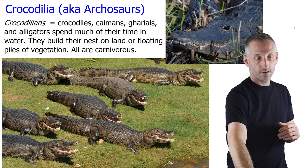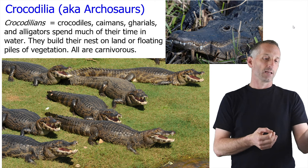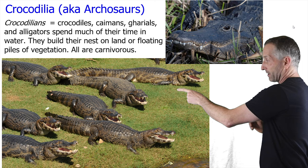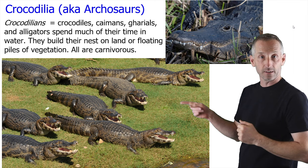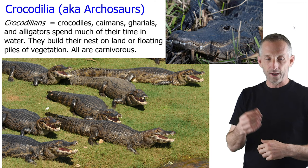The next group is Crocodilia, sometimes called archosaurs by taxonomists. These include crocodiles, caimans, gharials, and alligators. On the lower left is a cool cluster of caimans from the Brazilian Pantanal, and on the upper right an American alligator from Florida, seen just about a week before COVID lockdown.